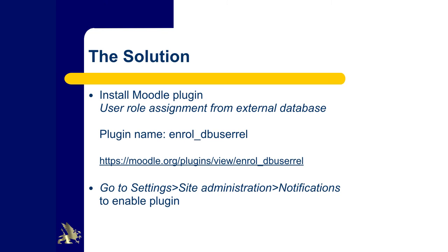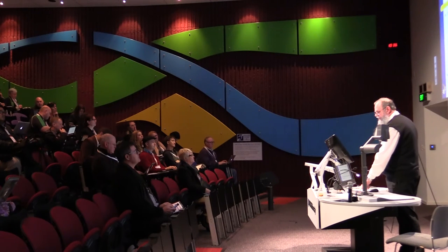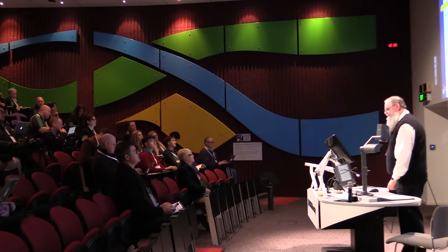There's a plugin you need to grab called the EnrolDB user relationship plugin. I've used it on Moodle 2.8 without any problems and suspect it should work with 2.9. You need to install it — if you haven't installed a plugin before it's fairly straightforward, and there are full details on the Moodle course site.